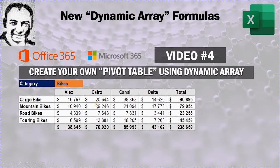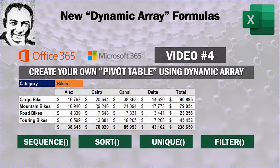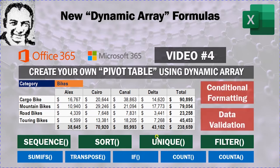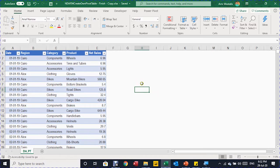In order to build this report, we are going to use dynamic array formulas such as SEQUENCE, SORT, and UNIQUE — all discussed in previous videos — and we add FILTER today, with a quick explanation now and more in future videos. We'll also use normal functions like SUMIFS, TRANSPOSE, IF, COUNT, and COUNTA, plus conditional formatting and data validation to add the drop-down and ensure the formatting changes dynamically with table size.